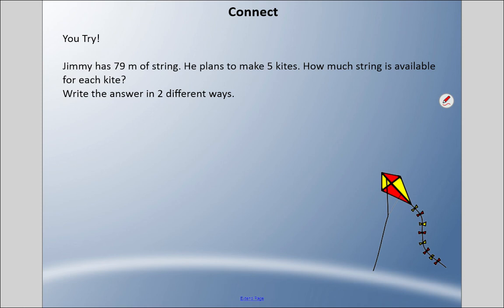In this problem, we have 79 meters of string divided into five kites. I need to know what 79 divided by five is. I'll use a repeated subtraction method here. We can multiply by 10, which gets us 50, leaving us 29 more.